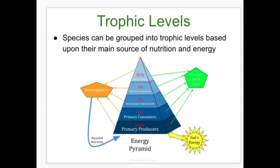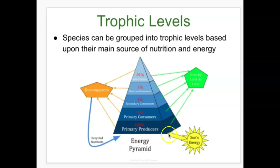We get our energy from food, and trophic levels are our feeding relationships. Species can be grouped into trophic levels based on their main source of nutrition and energy. The ultimate source of energy for almost all life on our planet is the sun. Looking at an energy pyramid, you see primary producers, primary consumers, secondary consumers, tertiary consumers, and apex predators. Primary producers carry out photosynthesis to convert solar energy into usable chemical energy, and as primary producers are eaten by primary consumers — herbivores — energy is transferred. The values go from 100 to 10 to 1 to 0.1 to 0.01.